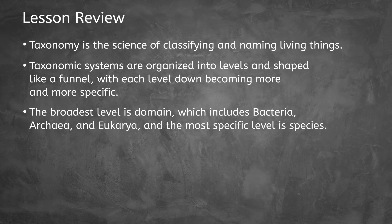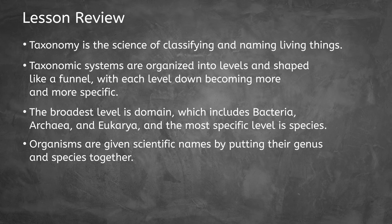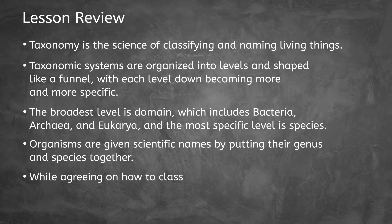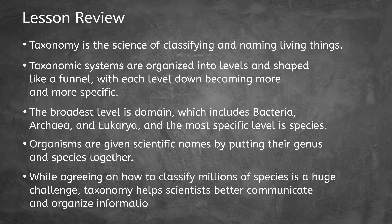archaea, and eukarya, and the most specific level is species. Organisms are given scientific names by putting their genus and species together. Finally, while agreeing on how to classify millions of species is a huge challenge, taxonomy helps scientists better communicate and organize information in a universal way.